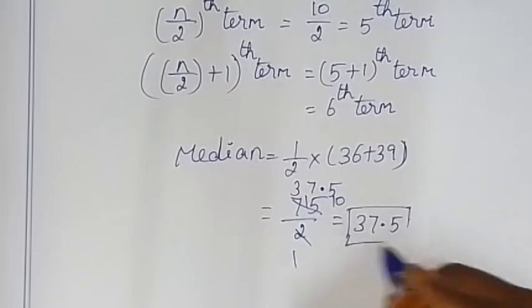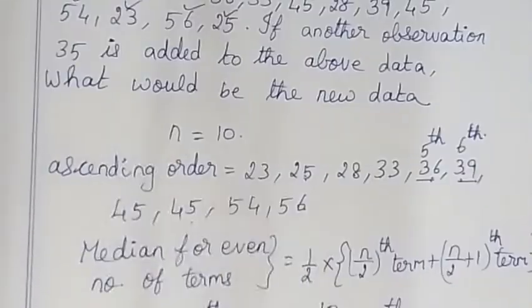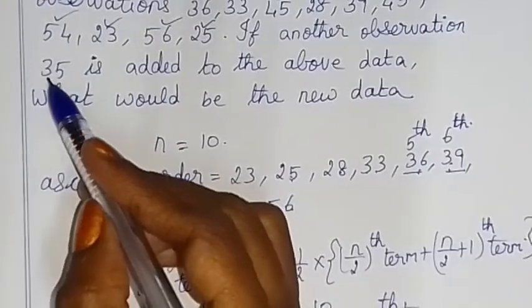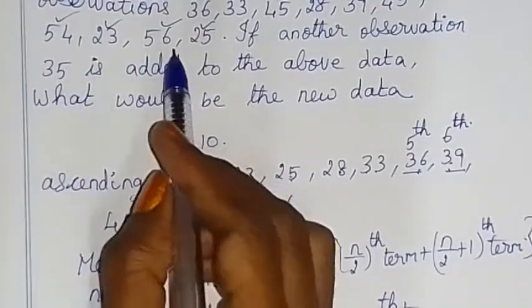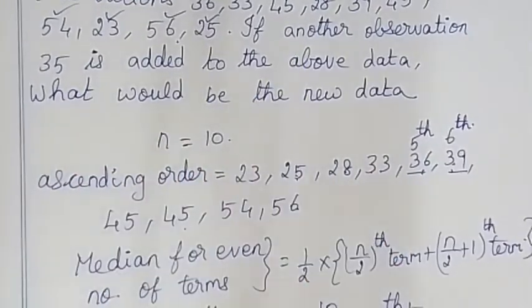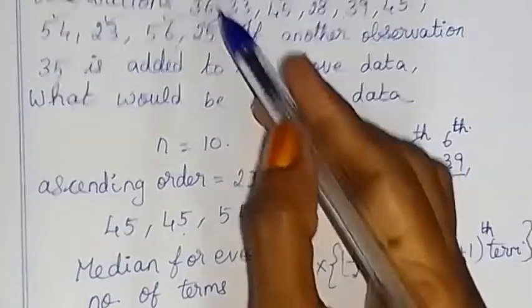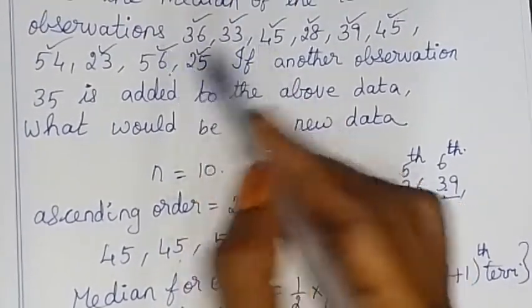Now, 35 is added to the data. The number of terms is now 10 + 1 = 11 terms.